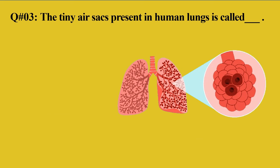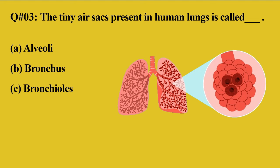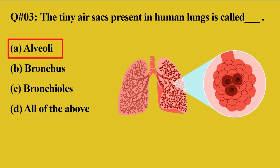Question number 3: The tiny air sacs present in the human lungs are called — option A: alveoli, B: bronchus, C: bronchus, D: all of the above. As already discussed, the tiny air sacs present on the tip of the bronchus are known as alveoli. These are grape-like clusters surrounded by tiny capillaries in which gaseous exchange takes place between the blood and the lungs.